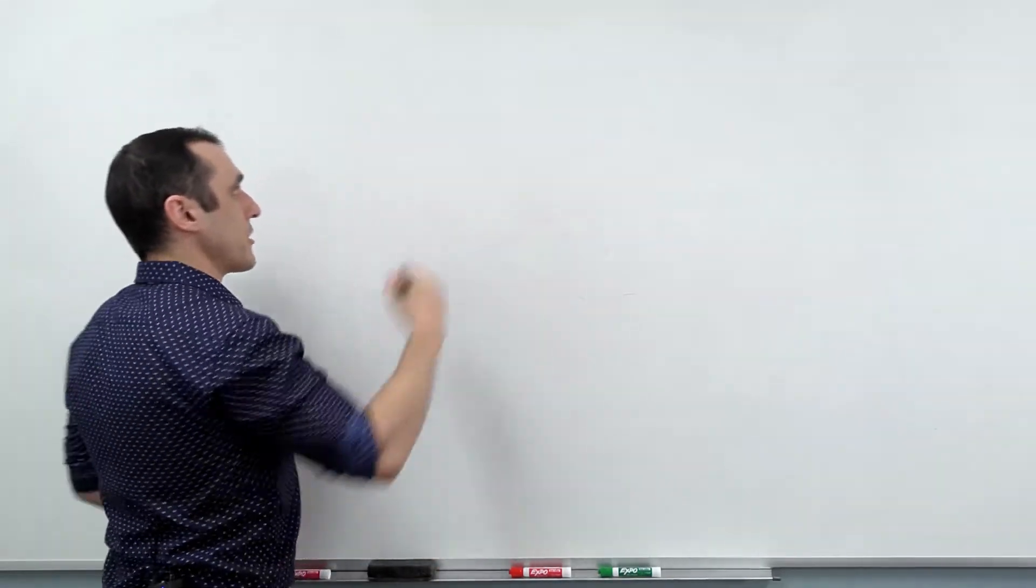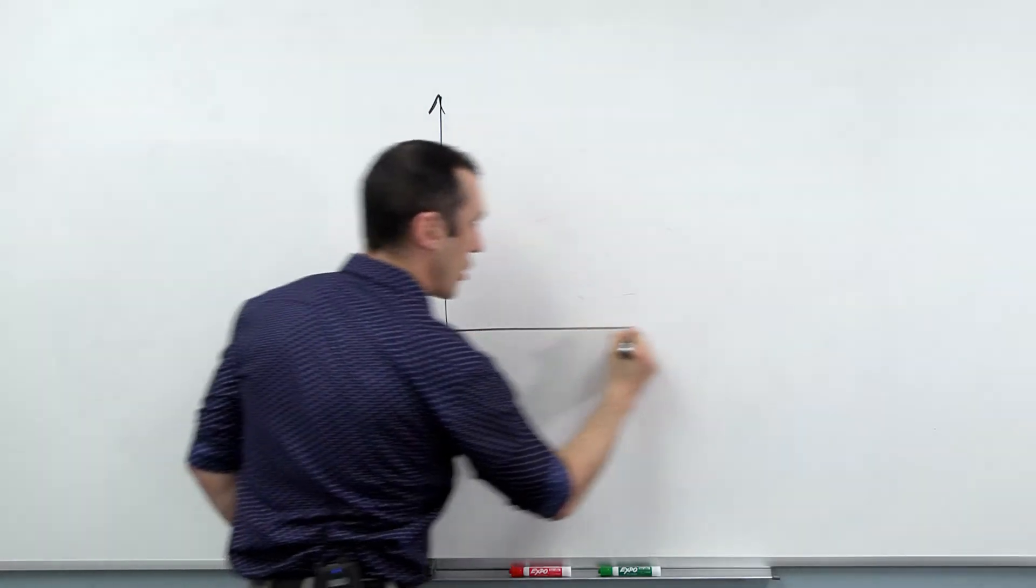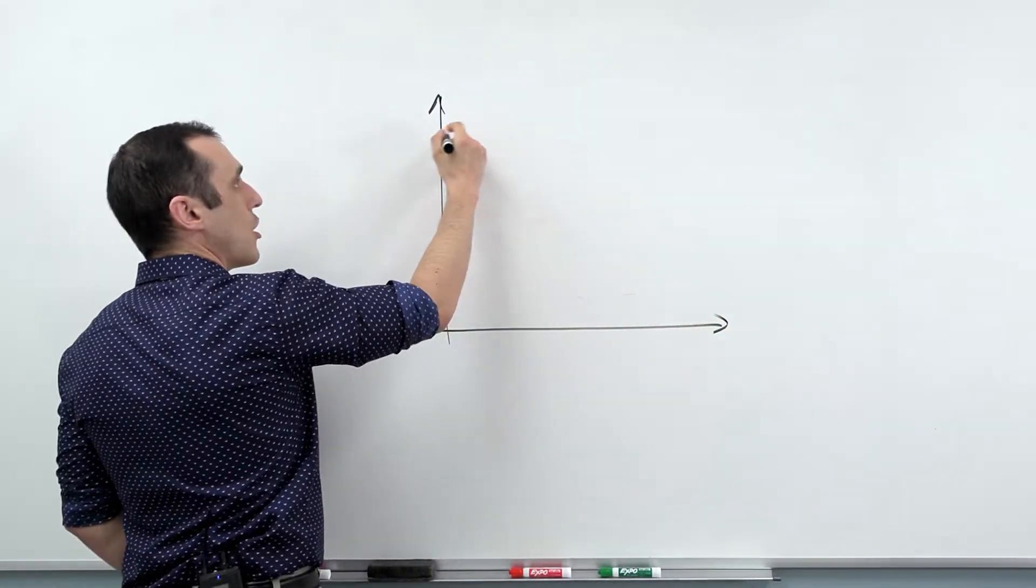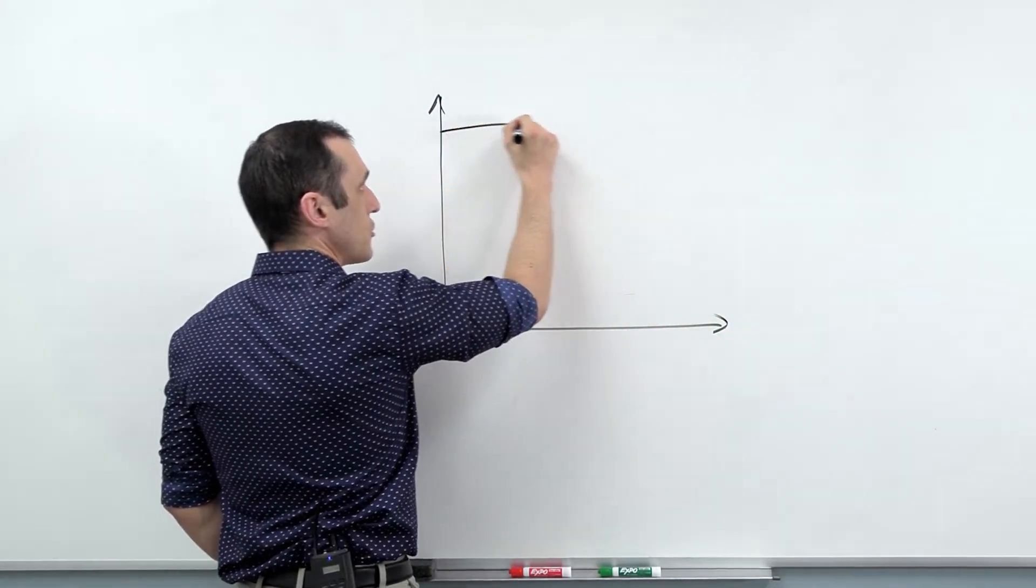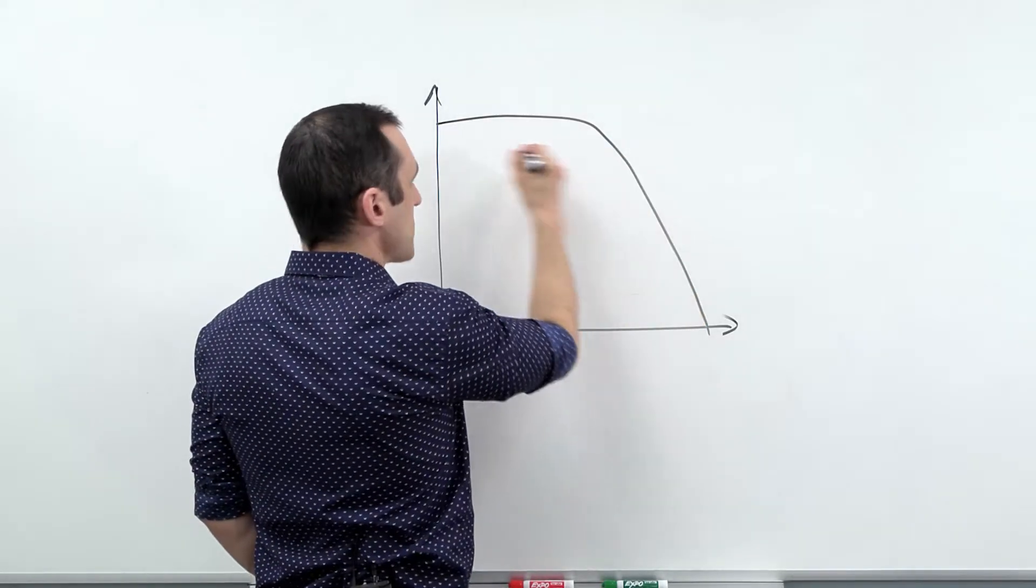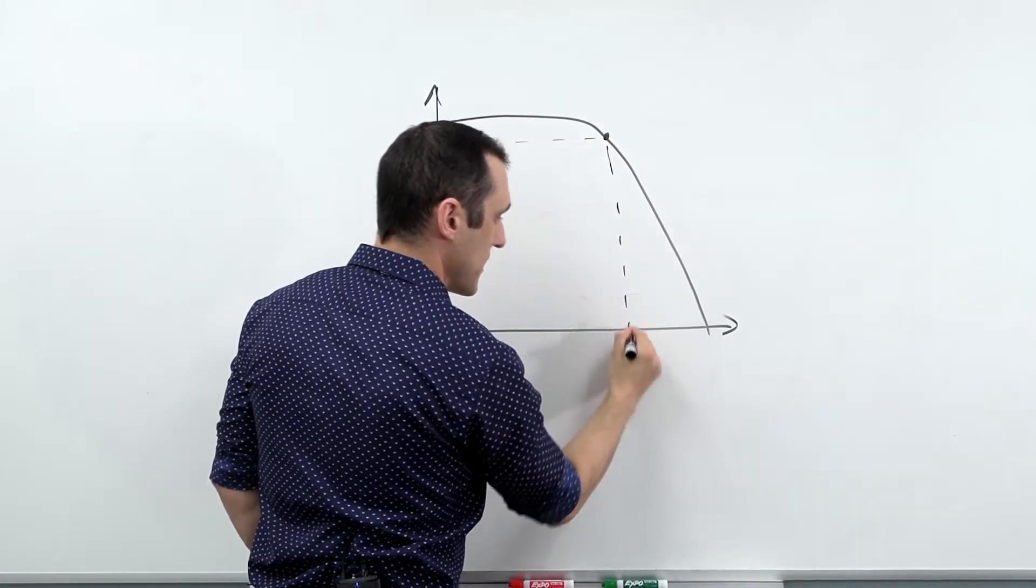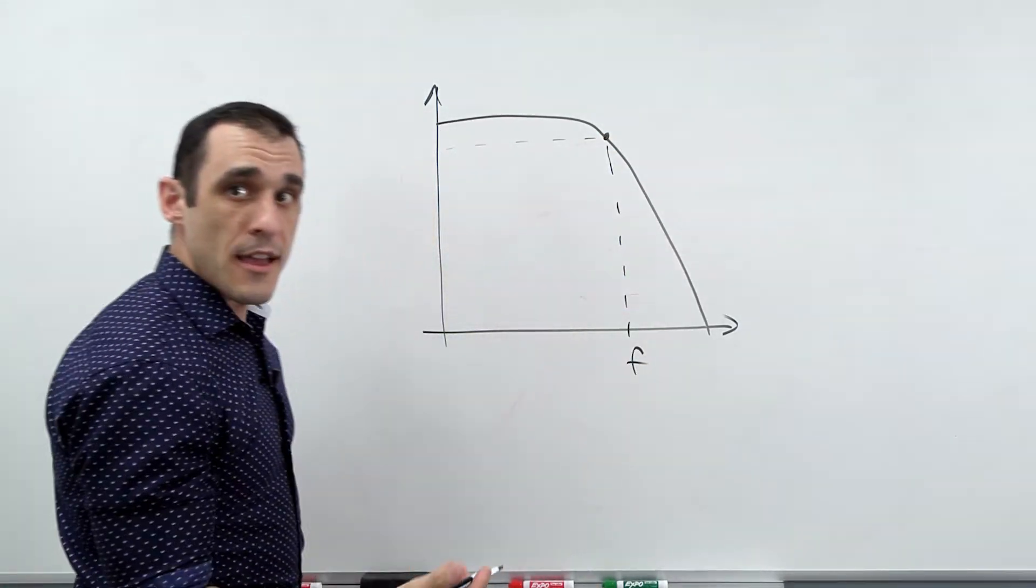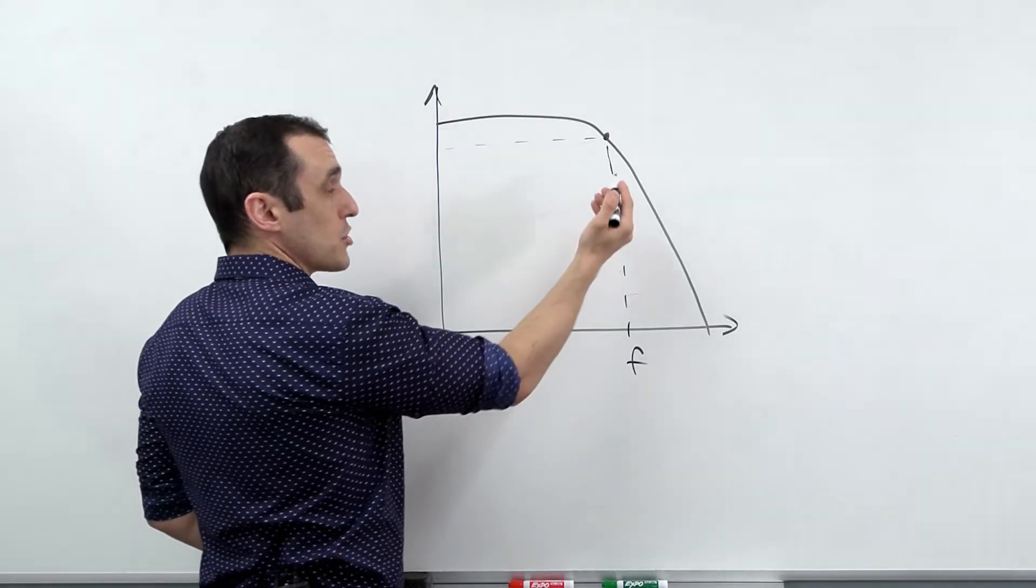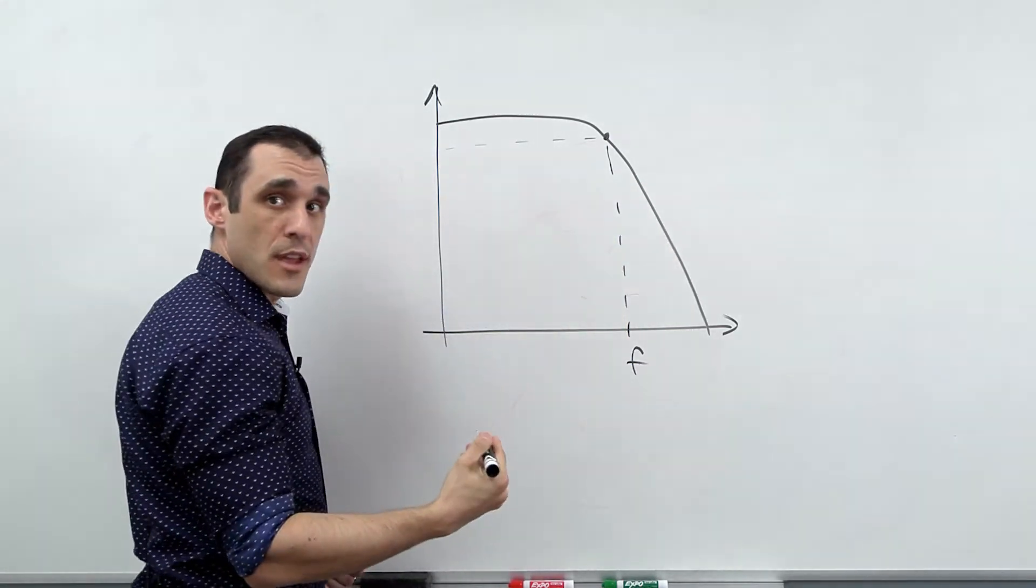In one example here with a filter, if we're looking at the transfer function, let's say it's a low pass filter. And so the transfer function magnitude basically looks something like this. Well, if we need to have very precise cutoff at a certain frequency right here, at this value F, then we need to make sure that component tolerances don't cause this roll off to vary too much.